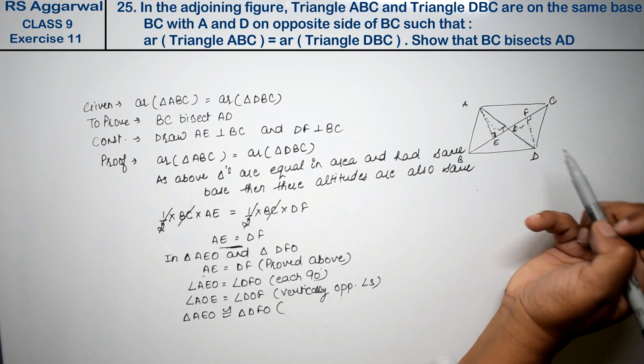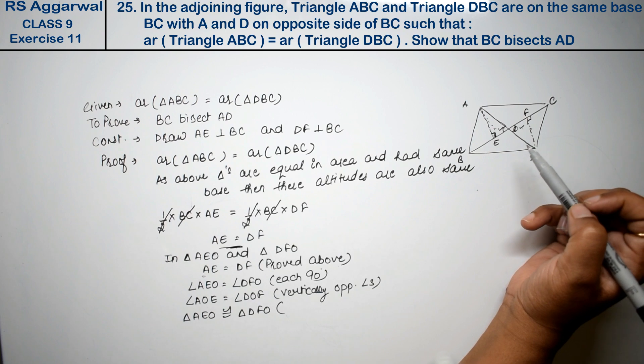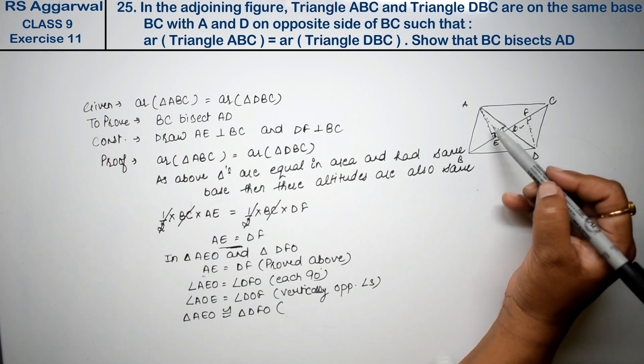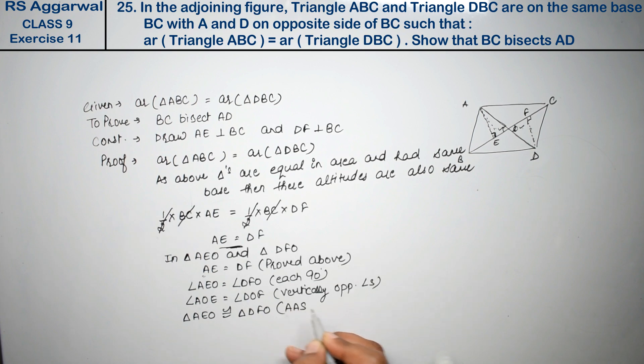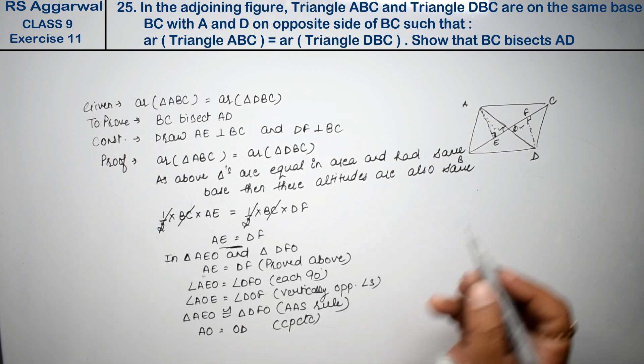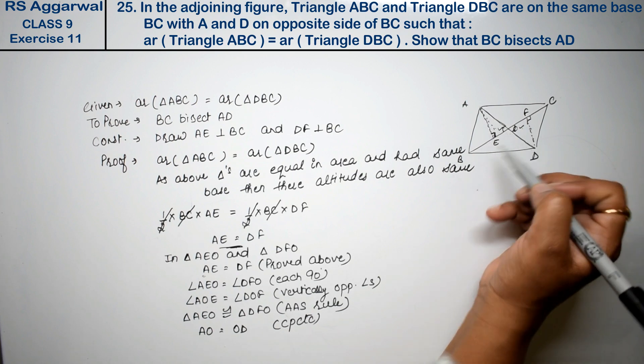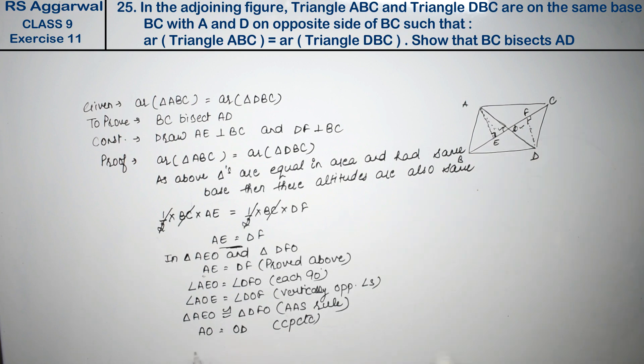By which rule? If there is hypotenuse, RHS is also proved. So which rule? Side angle angle. At this point, now we can say AO equals OD by CPCT.